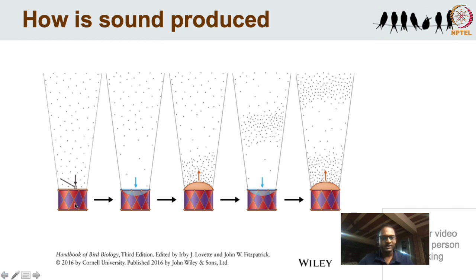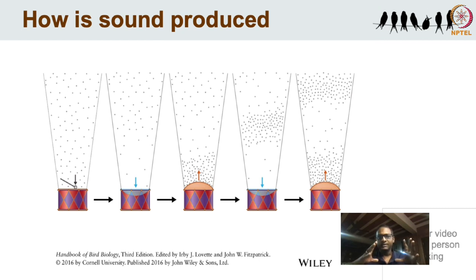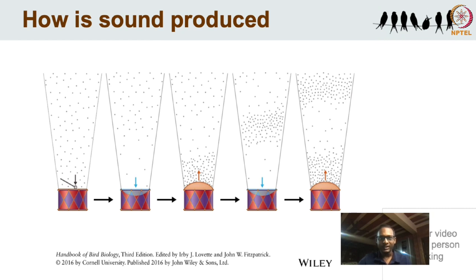This is a nice illustration — what you see here are drums. This is a drum and this is the stick with which the drum is struck. When the drum is struck, there are molecules all around, and essentially what happens is that there is a compression of these molecules and expansion that happens. This forms waves, and as these waves hit our ears, that is then translated into the sounds that we hear.